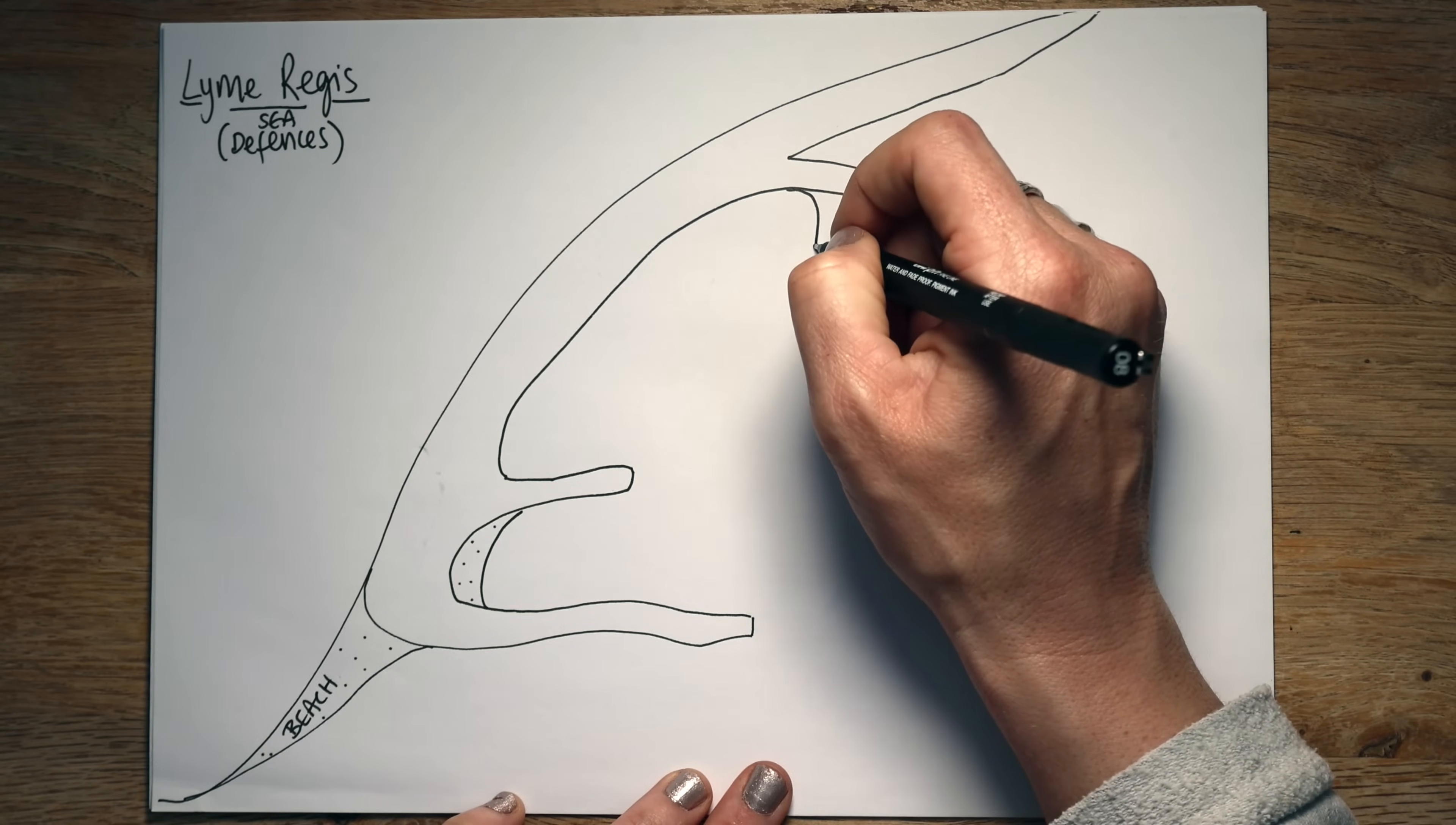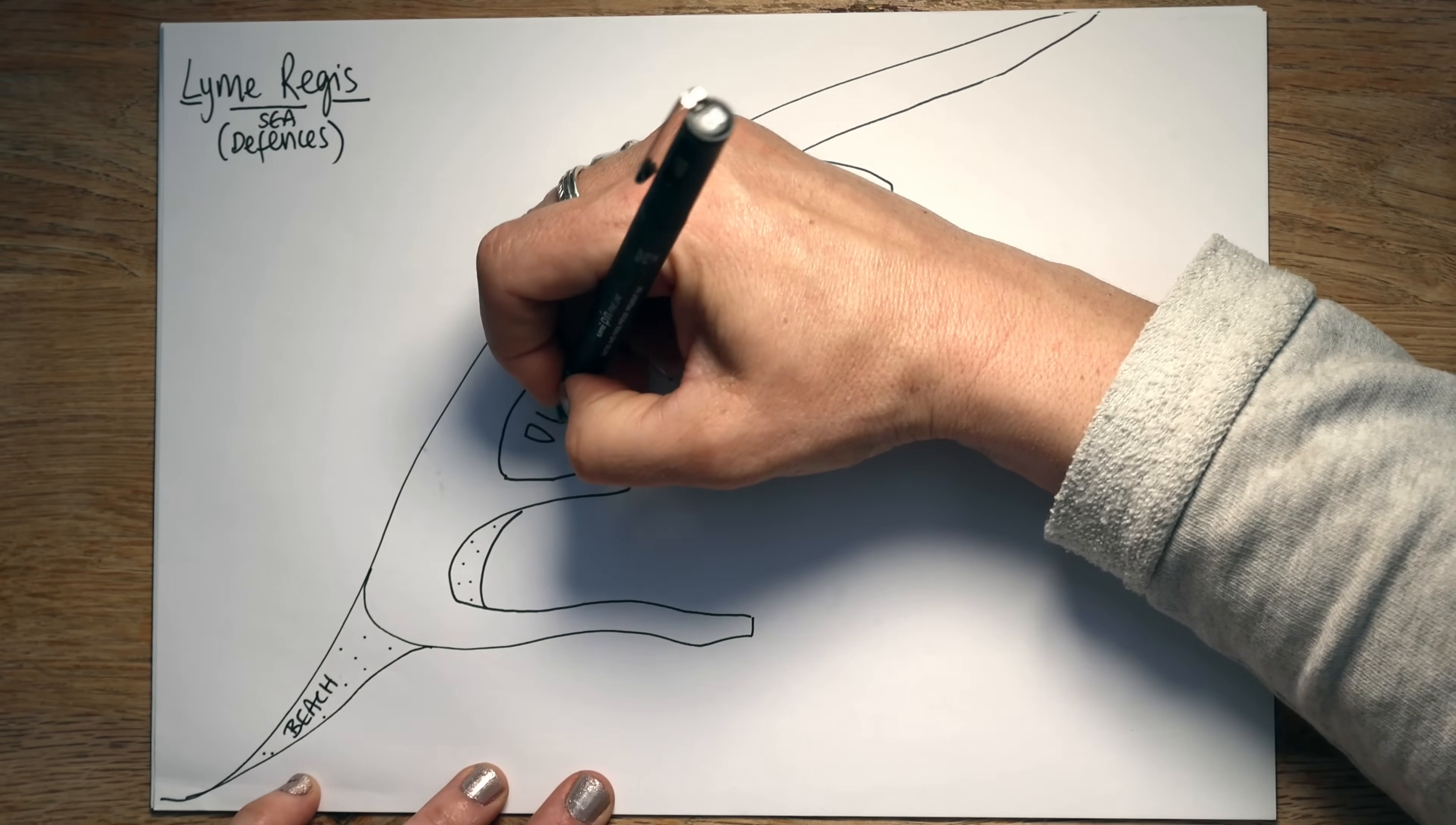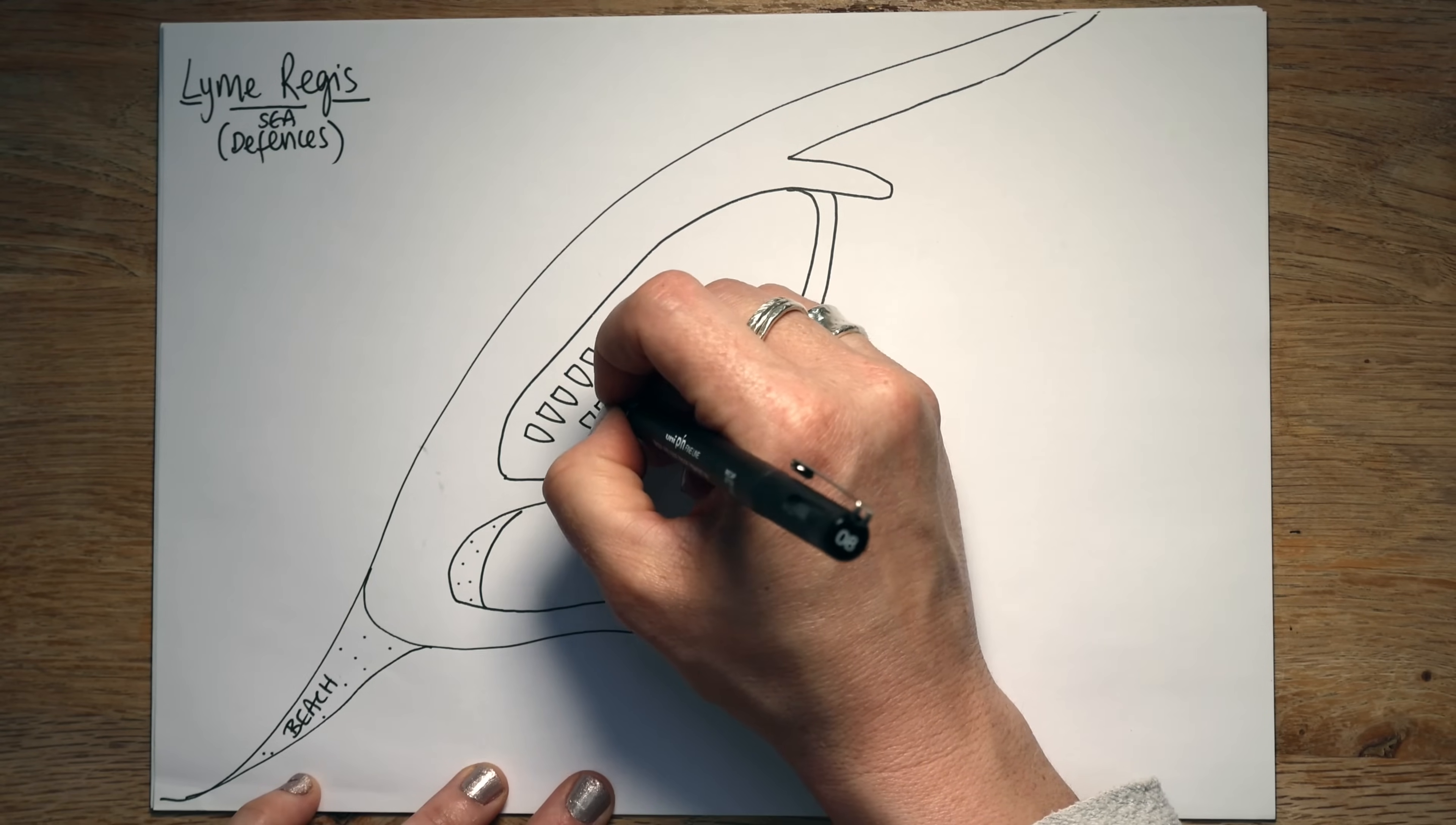Then we've got our harbour over here. And so we know that that's our harbour, I'm going to draw some boats, basically like little triangles in a row, because they are more or less in a row.